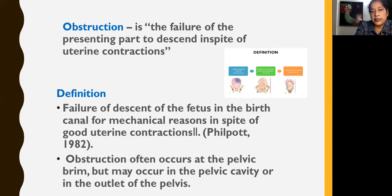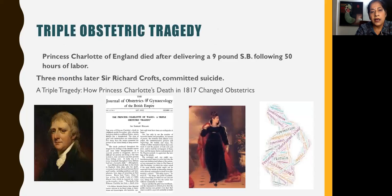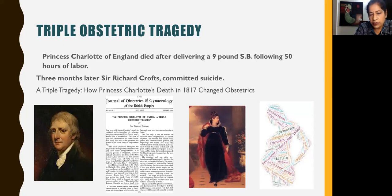Obstruction is the failure of the presenting part to descend in spite of good uterine contractions. The exact definition given by Phil Pott in 1982: failure of descent of the fetus in the birth canal for mechanical reasons, in spite of good uterine contractions, is termed obstructed labour. Obstruction can occur at the pelvic rim but may also occur in the pelvic cavity or at the outlet. Whenever we talk about obstructed labour, the triple obstetric tragedy comes to mind — Princess Charlotte of England died after delivering a 9-pound stillbirth following 50 hours of labour. The mother died, the baby was a stillbirth, and three months later Sir Richard Croft committed suicide.